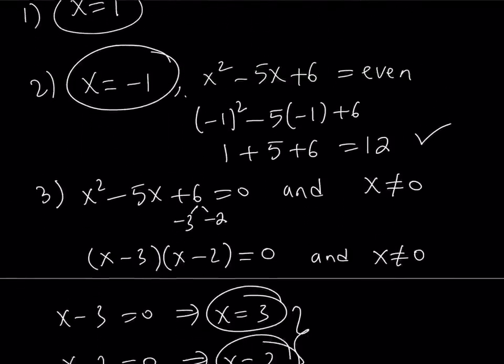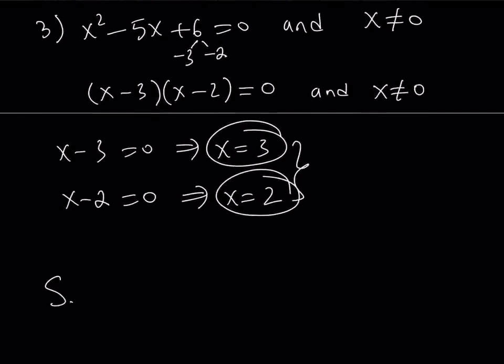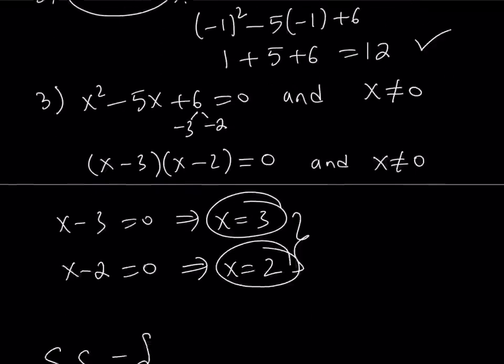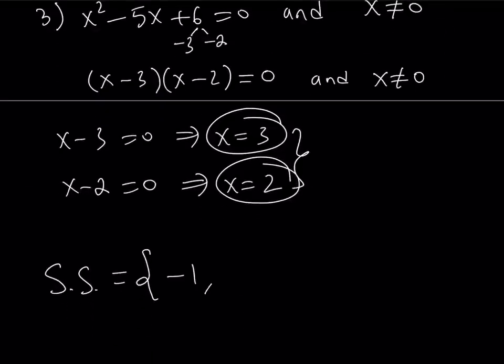Let's go ahead and put it all together. So I got as my solution set 4 solutions. I got negative 1, I got positive 1, I got 2, and I got 3. So these are all the solutions to this equation.